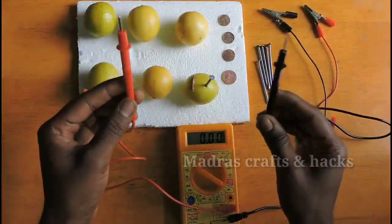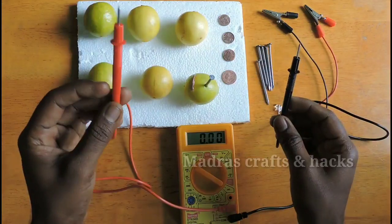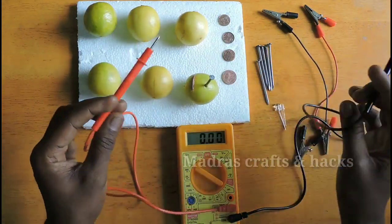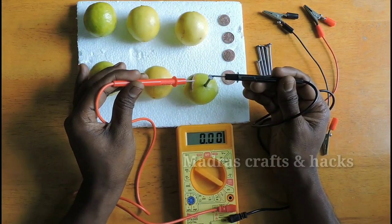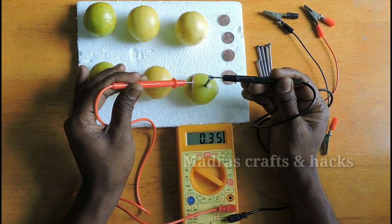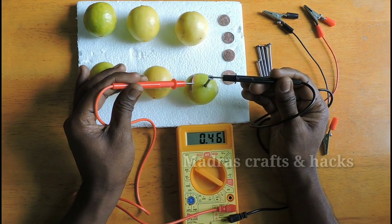Next, we will measure the voltage produced using a multimeter. Connect the negative end of the voltmeter to the galvanized nail and positive end to the copper coin. This single lemon battery is producing approximately 0.4 volts.